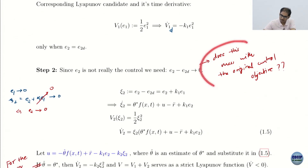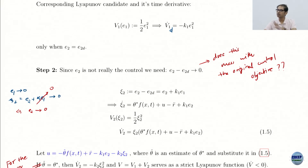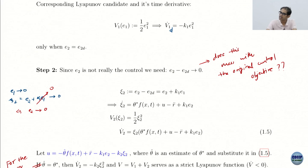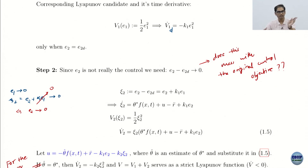One key question: does introducing ψ₂ mess with the original control objective? The original objective was to drive E₁ and E₂ to zero. With the new dynamics, the objective becomes driving E₁ and ψ₂ to zero. If E₁ and ψ₂ both go to zero, then since ψ₂ = E₂ + K₁E₁ and E₁ → 0, we get E₂ → 0 as well. This transformation is non-singular, so E₁, ψ₂ → 0 is equivalent to E₁, E₂ → 0.